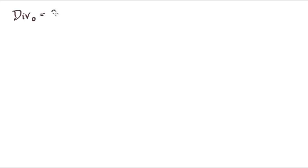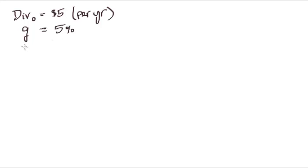The Gordon Dividend Model says that if a company is paying a dividend of, say, $5 per year, and the company's dividend is growing at a growth rate of 5%, and the company's equity has a riskiness implied by a rate of return of 7% — meaning if you put money in a bank you might get 2–3% because bank deposits are very low risk — then if you put this money in a stock, you demand a higher rate of return, reflected by the 7% here.